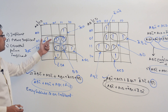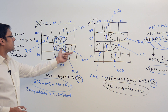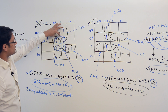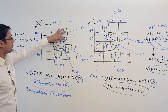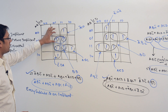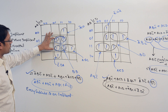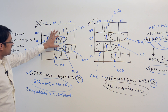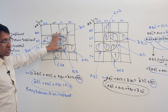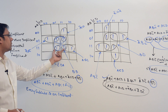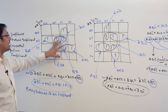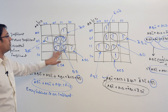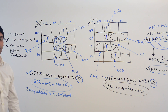For example, this is an implicant, this is an implicant, this is an implicant, this is an implicant. Even the smaller ones — a subcube of size 2 is an implicant, a subcube of size 2 is an implicant, a subcube of size 2 is an implicant. As long as this bigger subcube of size 4 — it is also an implicant.